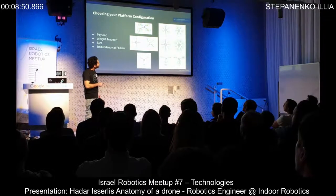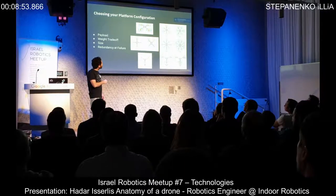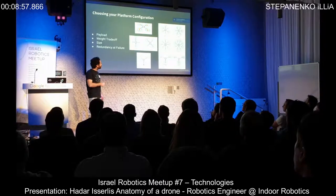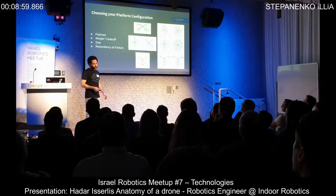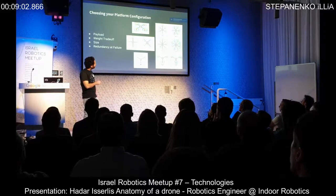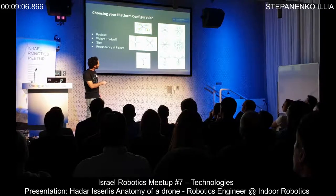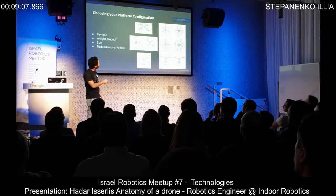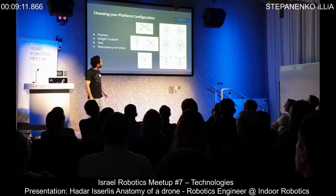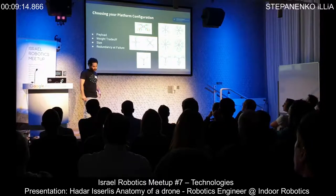A good benefit of more rotors is redundancy. Unless you're developing MIT-level algorithms for flying with one or two failed rotors, a quadcopter will likely crash with one motor failure. But a hexacopter or octocopter can continue flying even with one or more motor failures.